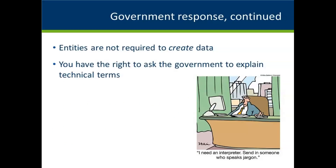If data do not exist, government does not have an obligation to provide requested data, because entities are not required to create data in response to a data request, generally. You have the right to access government information in the format in which entities maintain it. So if you ask for an Excel spreadsheet but government maintains the information in paper, the government is not required to create an electronic spreadsheet for you. This also commonly happens when data requesters ask for lists — sometimes government maintains lists, and other times they don't, so if you ask for a list that government doesn't maintain, they don't have to create it.